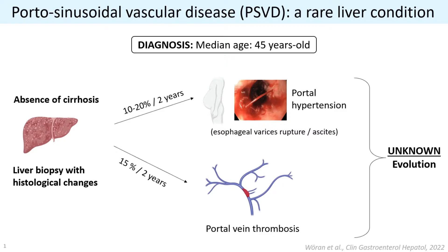As PSVD progresses, 10 to 20 percent of patients among two years present portal hypertension and its complications, such as esophageal variceal ruptures, in lower cases gastrointestinal bleeding or ascites. On the other hand, 50 percent of the patients also at two years of diagnosis present portal vein thrombosis.